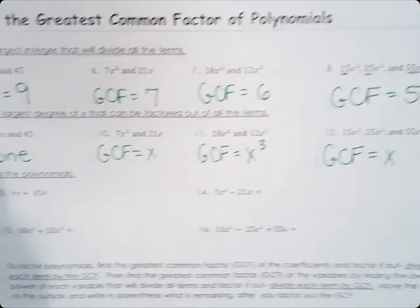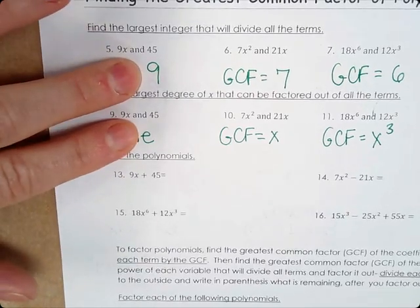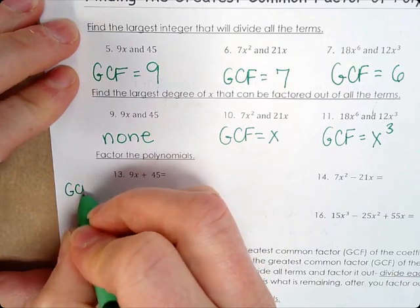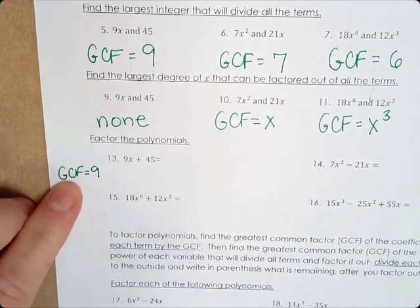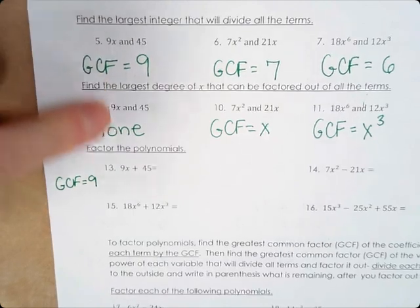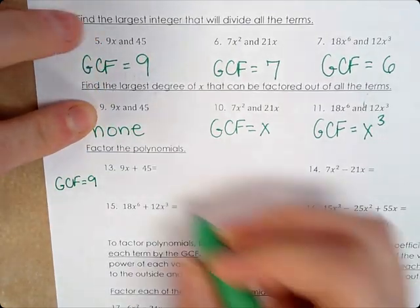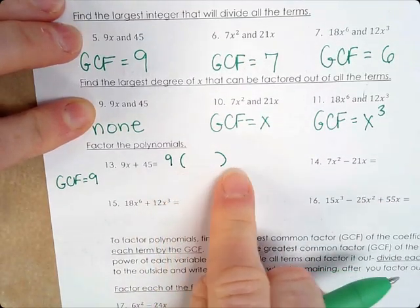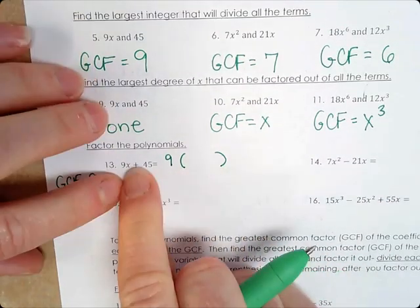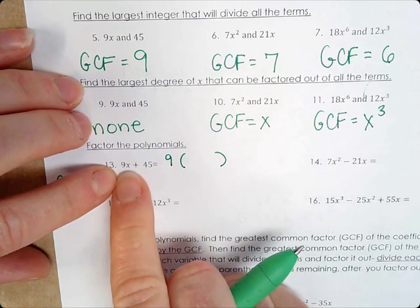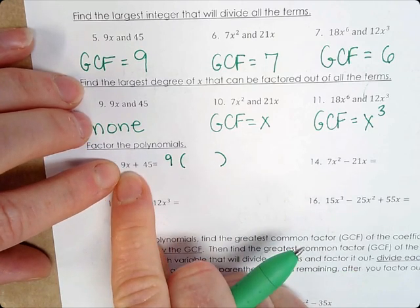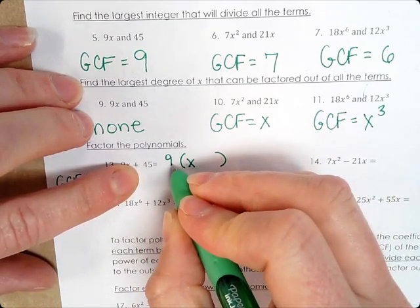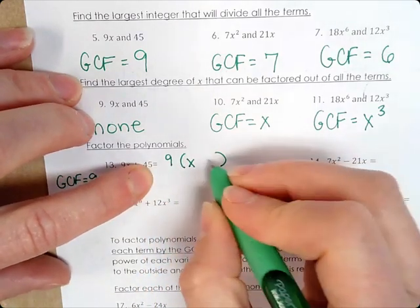Now we use this to factor. Our GCF is 9, so we factor out a 9 with two terms inside the parentheses — because there are two terms in the original expression. Nine times what gives 9x? Just x. Nine times what gives 45? Five. So the answer is 9(x + 5).